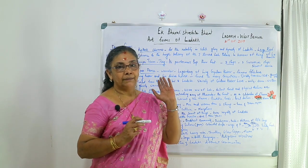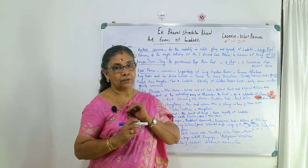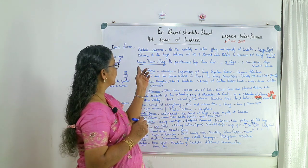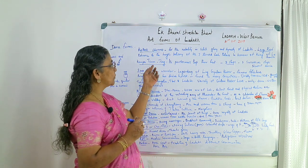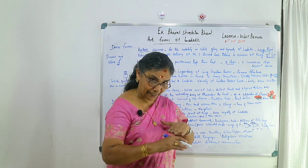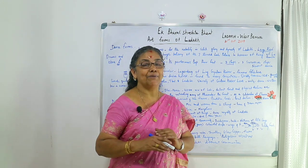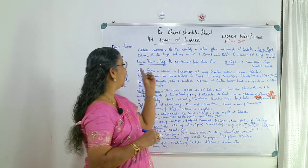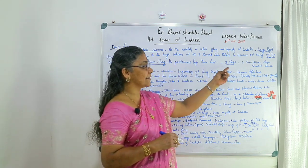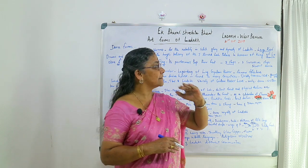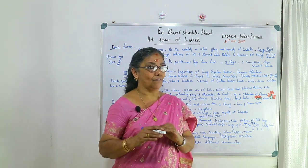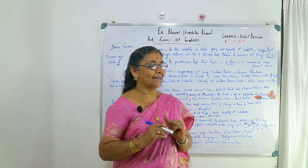Next is Kamba Sumsang. Tapping the feet is very important in this dance. The meaning of Kamba Sumsang is 'the three steps,' and three successive steps are used. It is the slowest dance form of Ladakh.